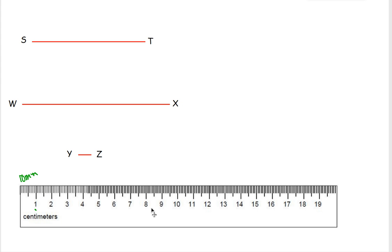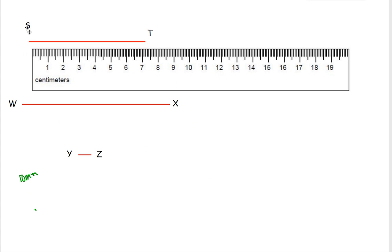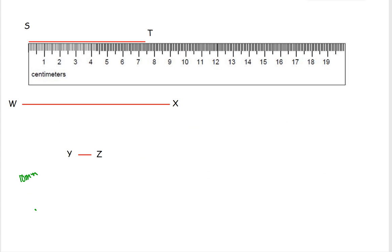So let's look at line ST. So we can see here that line ST is the same as seven centimeters. So that would be seven. And then we would say that it is and, how many tenths? One, two, three, four. So it would be seven and four tenths centimeters.